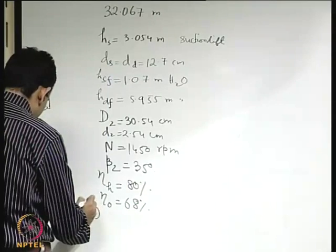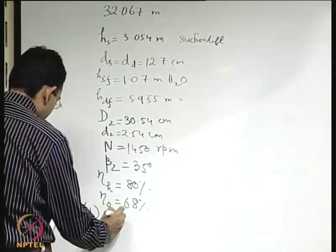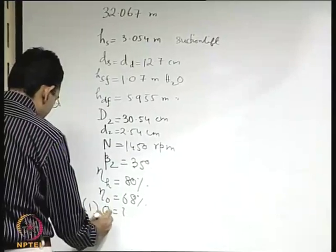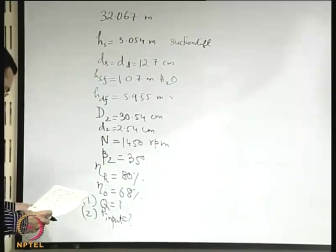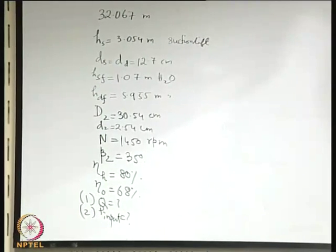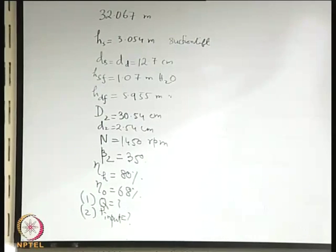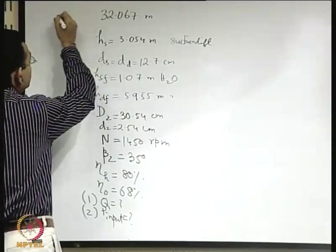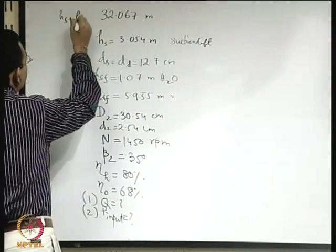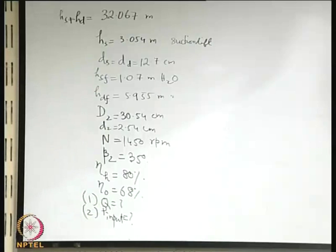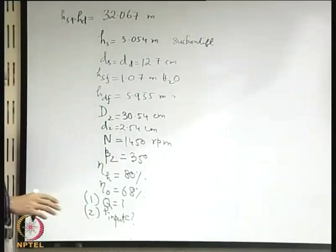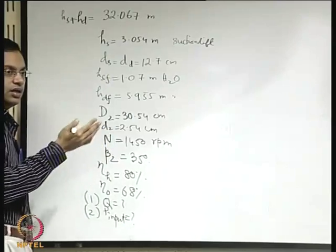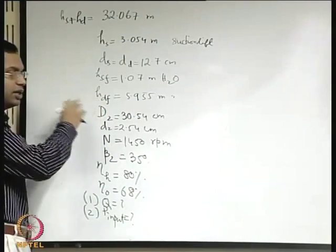We have to find: number one, what is the discharge from the pump, and number two, what is the power required to drive the pump? Some of the data have decimal points due to conversion from the old FPS system to the new SI system. For example, 2.54 centimeter is just 1 inch width.